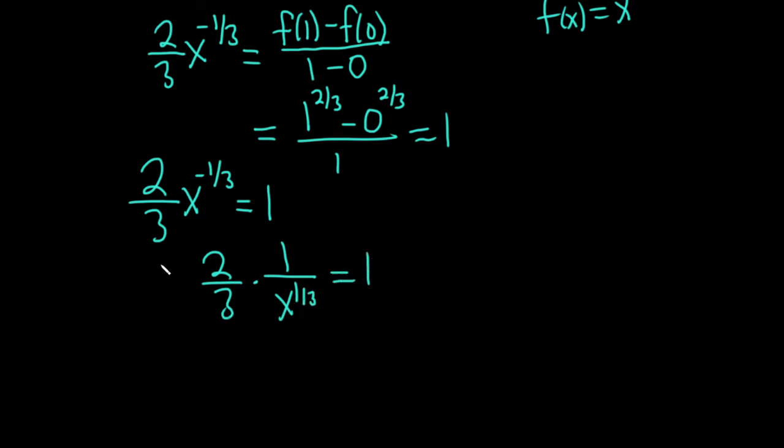And then maybe multiply by the x to the one third so we can get it out of the denominator. So we get two thirds equals x to the one third.